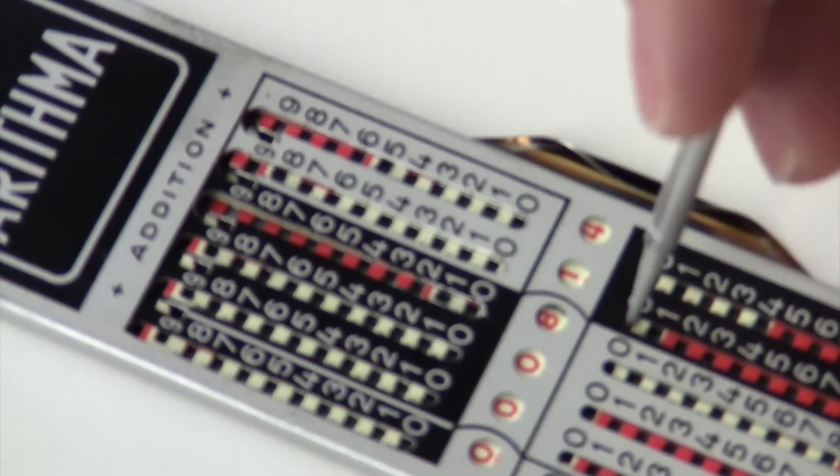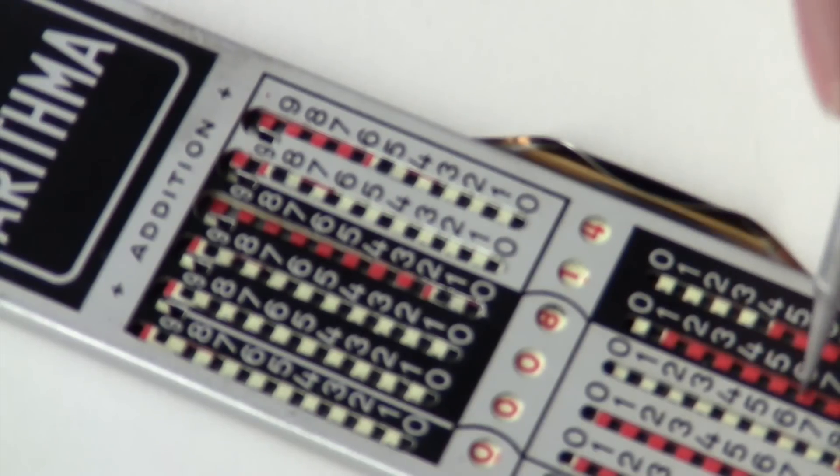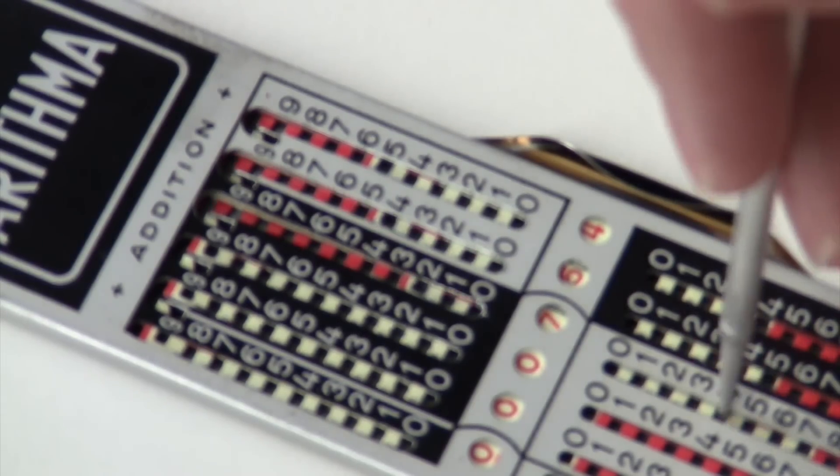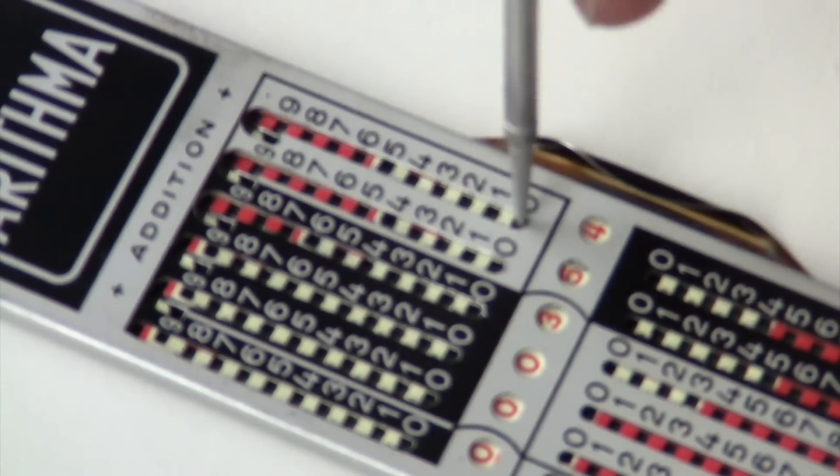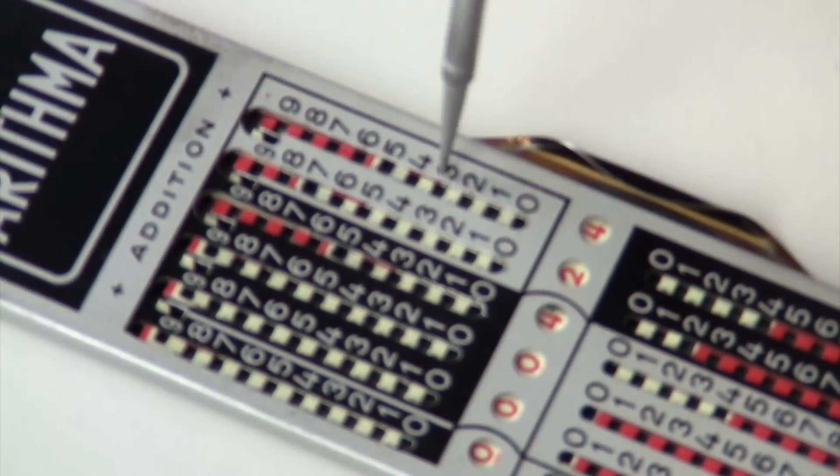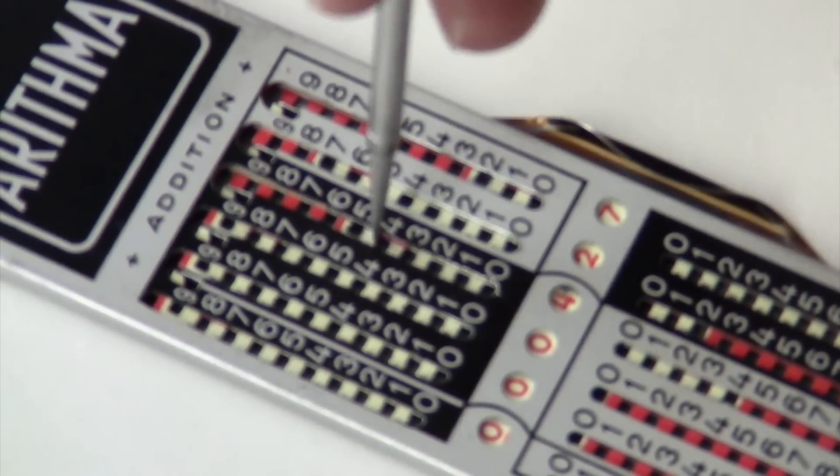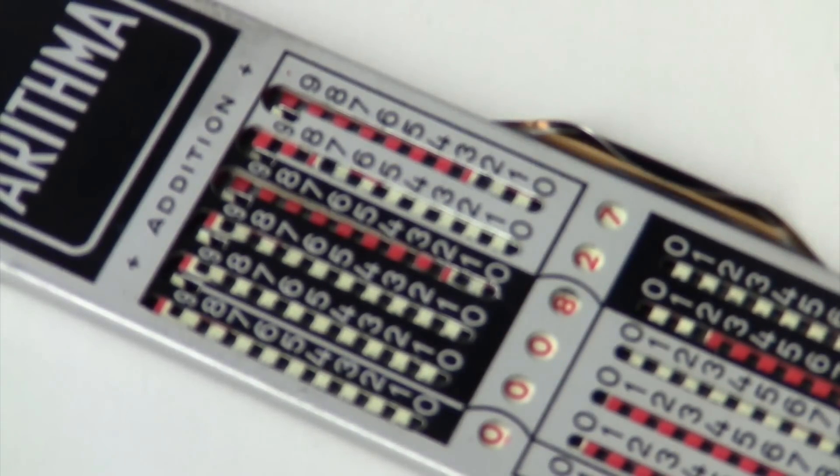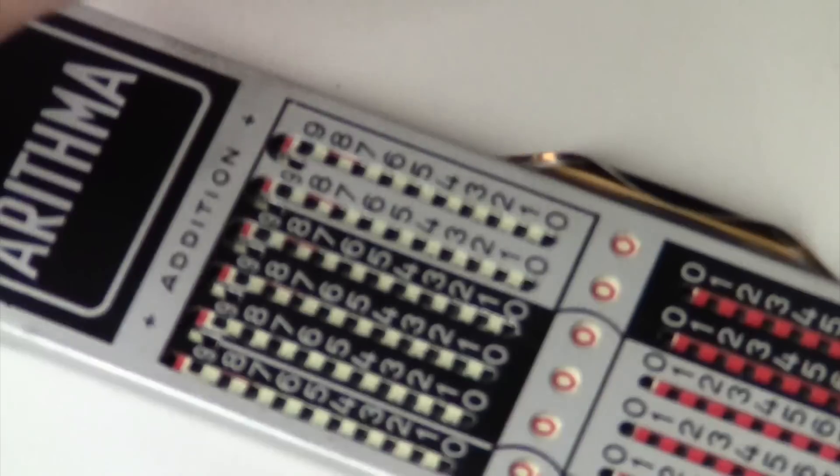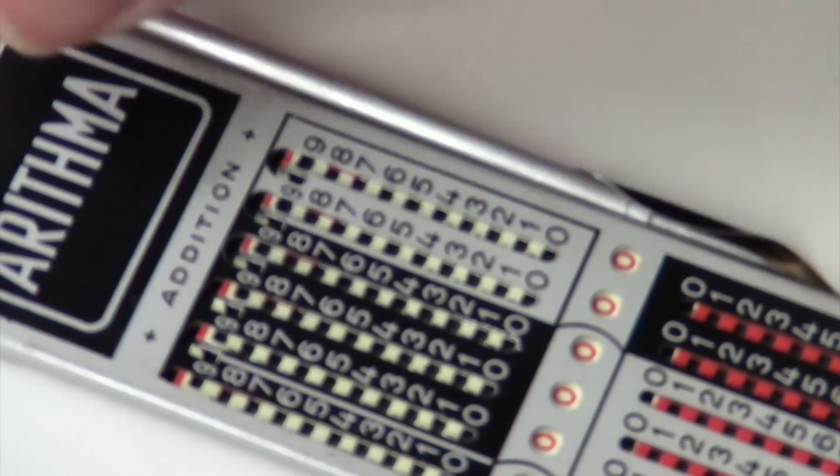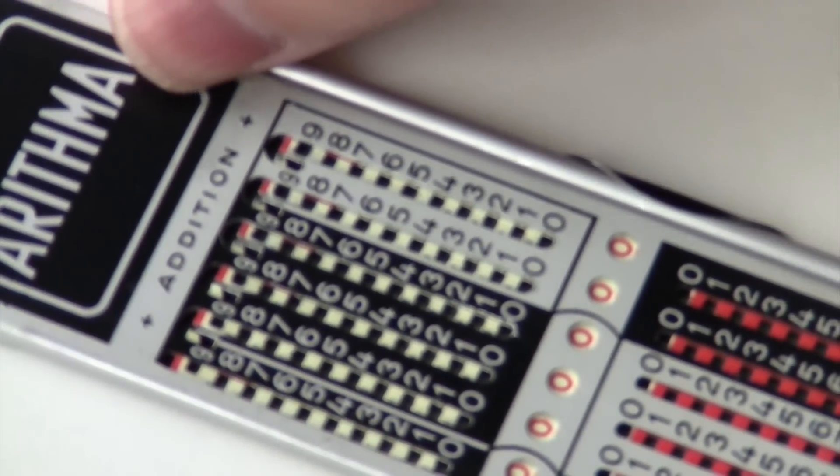This addiator can do subtraction too. To subtract something you use the lower sliders and you go up instead of down. The symmetry there is pretty pleasing. Actually the whole thing is pretty pleasing. The more you use it the more simple and obvious it seems. That's completely opposite of the big industrial style adding machines. It's a great little device.